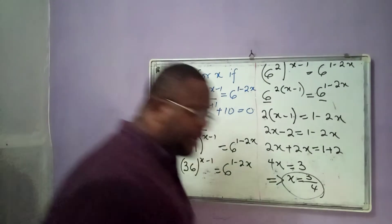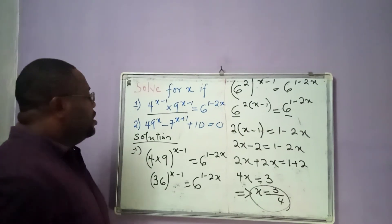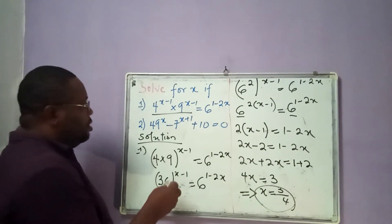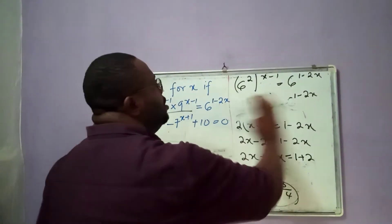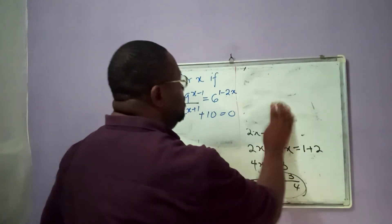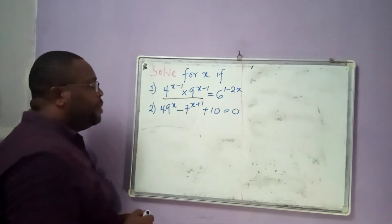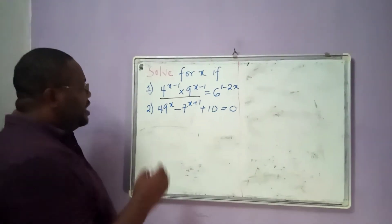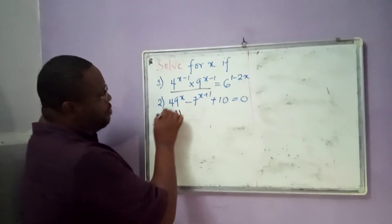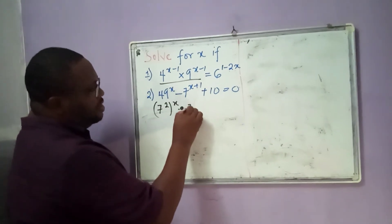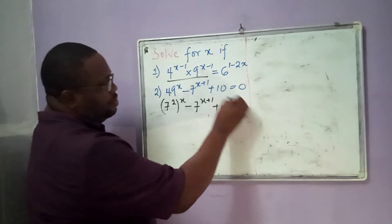Now the second problem — let's quickly get the solution to the second problem. The second problem: we are simply going to have 49 is the same thing as 7 squared, all raised to the power x, minus 7 raised to the power of x plus 1, plus 10, equal to 0.